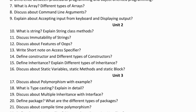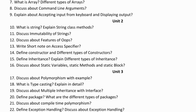Fifteenth question: define inheritance and explain different types of inheritance — single inheritance, multiple inheritance, multi-level inheritance, and hierarchical inheritance. In Java, multiple inheritance is not supported, so we use the concept of interface. Sixteenth question: discuss about static variables, static methods, and static block. This is a five marks question.